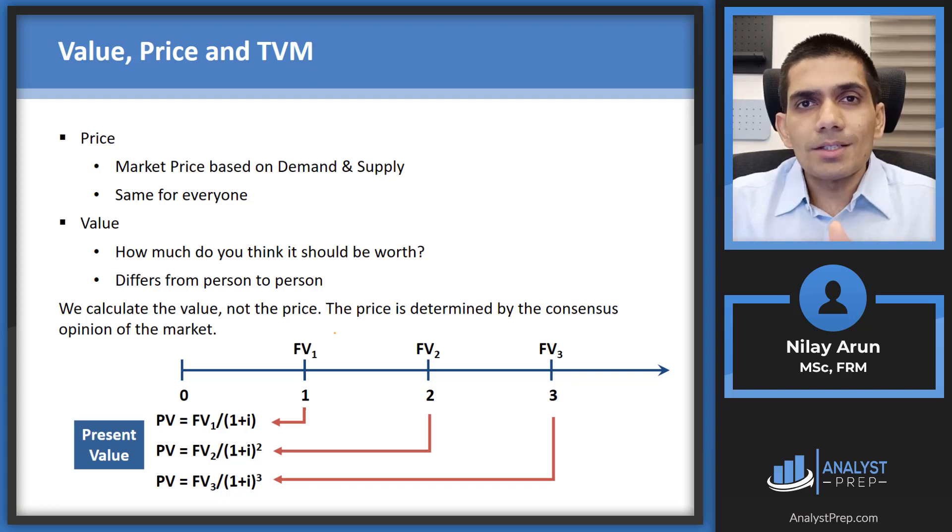So for instance, one analyst might say that a stock or a bond is overvalued. Another might say that the same bond is undervalued and another might feel that it's fairly valued. We are not saying that one is wrong or the other is right. What we're saying is that they're coming to different values because they are using different assumptions in the analysis and for any market to exist, you need to have different opinions in the market. So value essentially means how much do you think a particular asset is worth? Now this is going to differ from person to person.